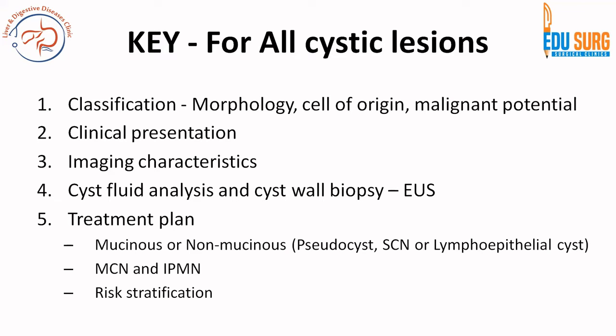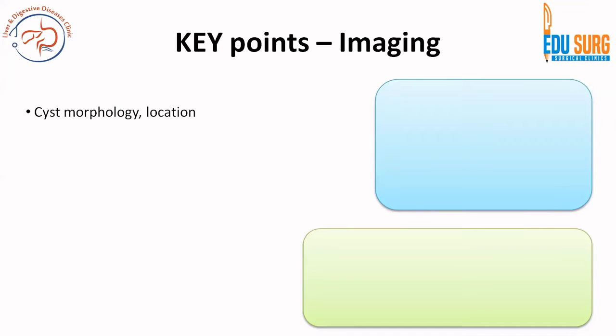It is important to understand that the first step in identifying a good treatment plan or understanding which guideline to utilize for a particular patient is the first four steps. We have finished nearly the first three of them. Today we will finish the fourth step and then go towards mucinous neoplasms. When it comes to imaging, there are six important points that you need to see whenever you see or advise a scan for a pancreatic cystic lesion.